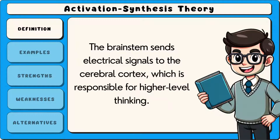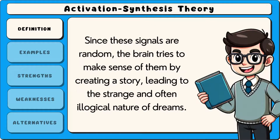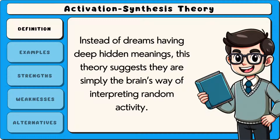The brainstem sends electrical signals to the cerebral cortex, which is responsible for higher-level thinking. Since these signals are random, the brain tries to make sense of them by creating a story, leading to the strange and often illogical nature of dreams. Instead of dreams having deep, hidden meanings, this theory suggests they are simply the brain's way of interpreting random activity.